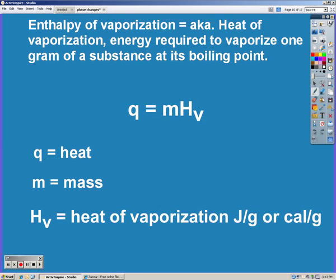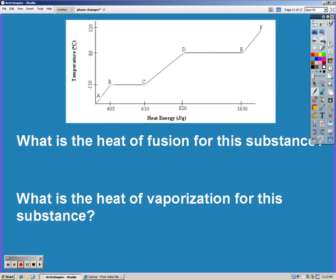The enthalpy of vaporization, or the heat of vaporization, is the energy required to vaporize one gram of a substance at its boiling point. So it's the same exact equation, except we're going to use the Hv, or heat of vaporization.